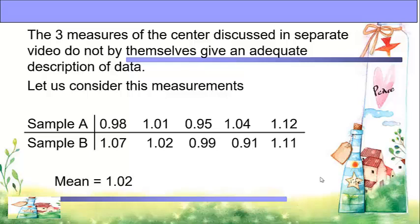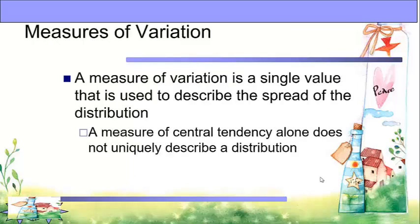The most important statistics for measuring variability of a set of data are the range and the variance. The simplest to compute is the range. A measure of variation is a single value used to describe the spread of the distribution, in which a measure of central tendency alone does not uniquely describe a distribution.